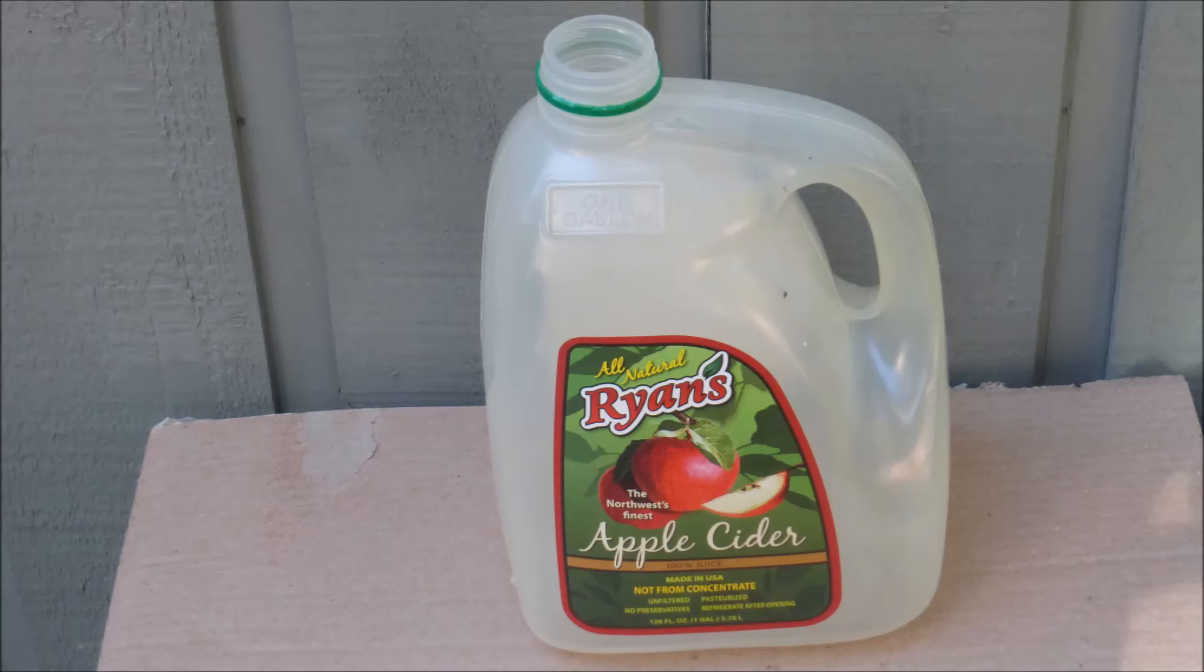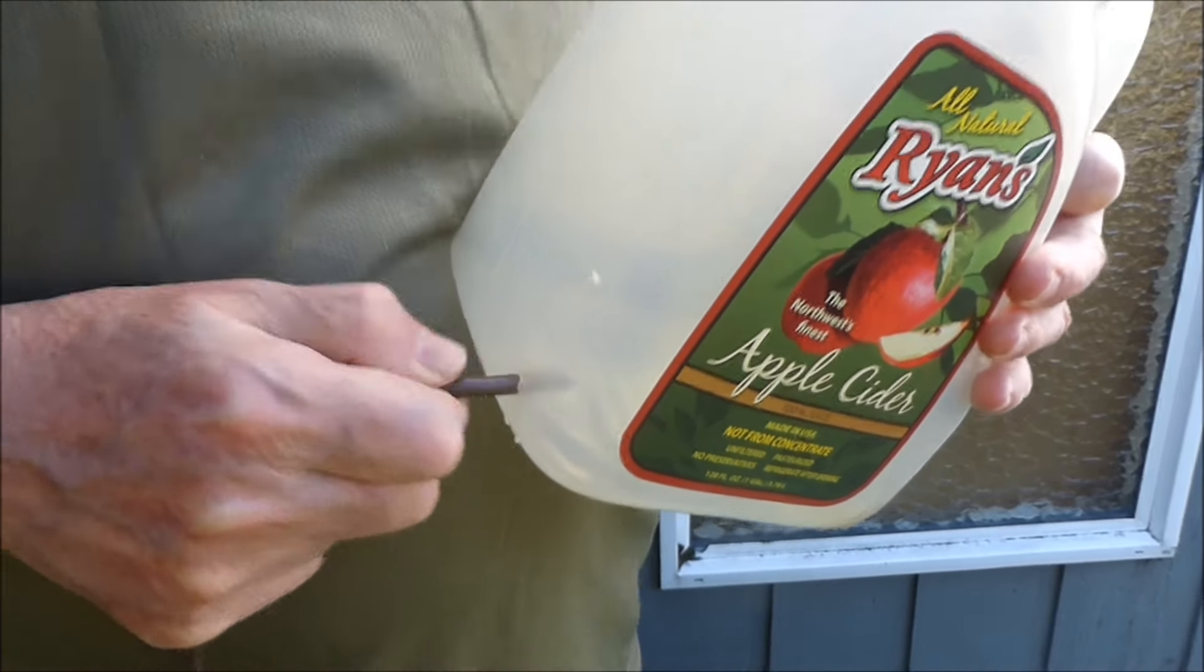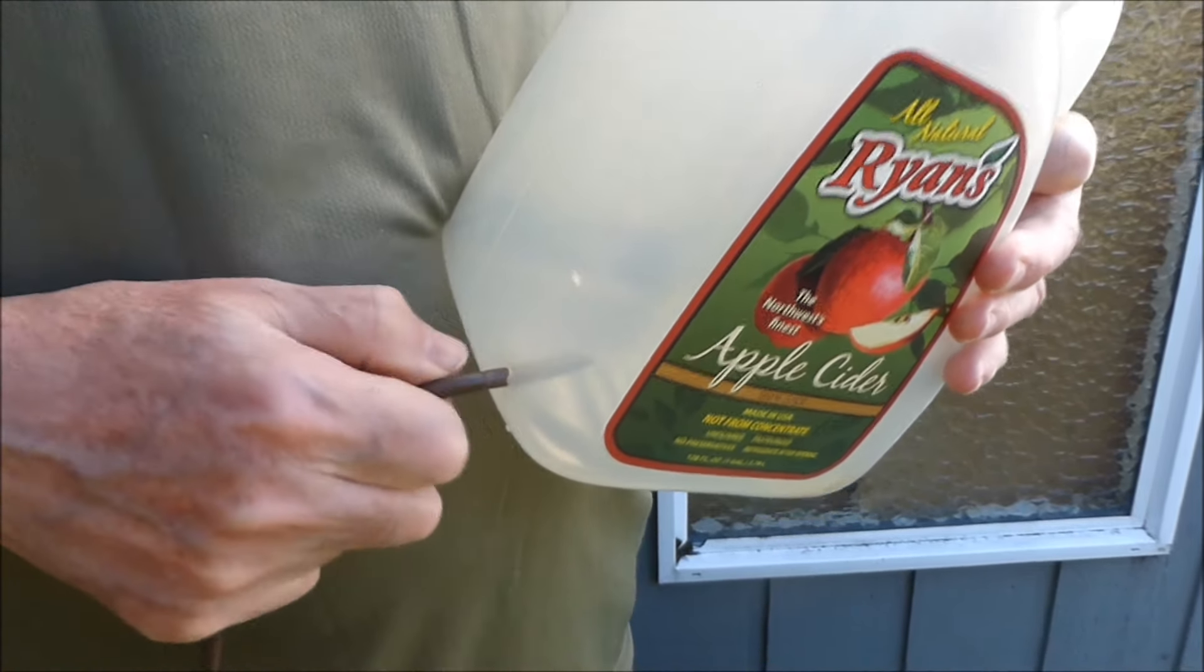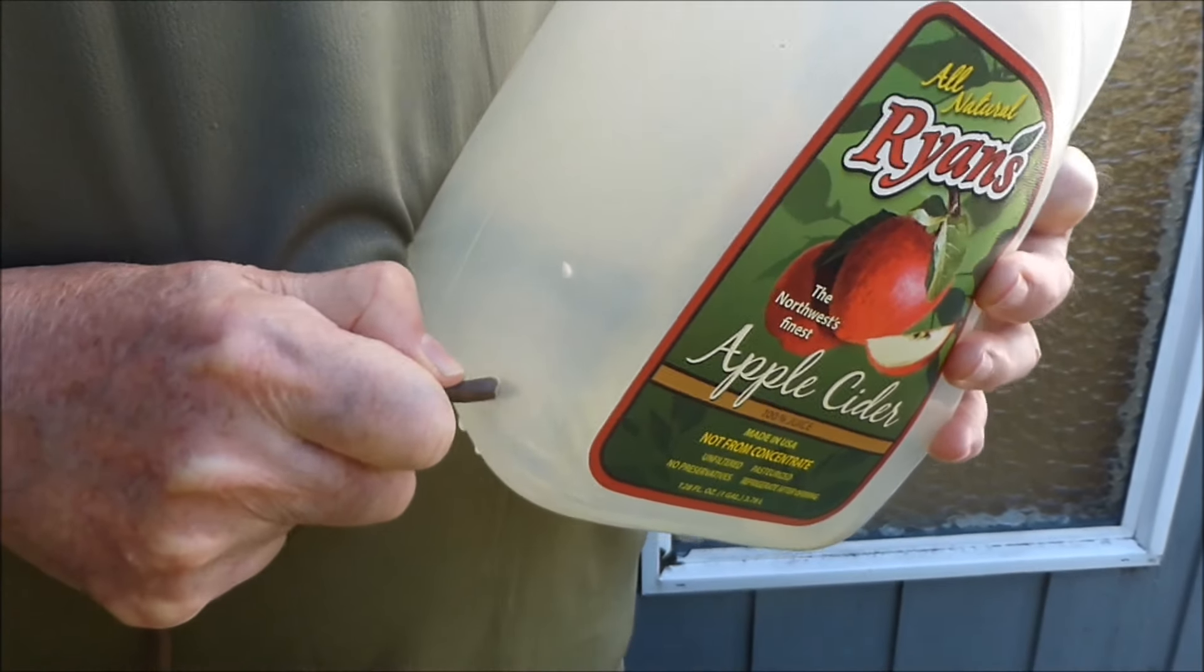A water supply tank is represented by this one gallon plastic model. A slightly undersized hole is drilled in the bottle and one quarter inch plastic tubing is forced through the hole. This is a watertight connection.